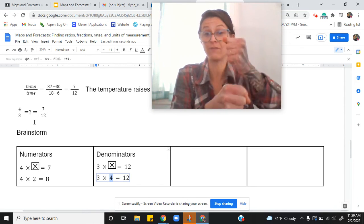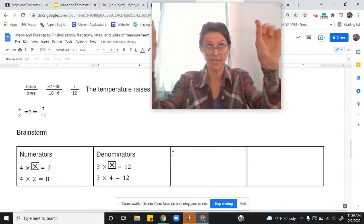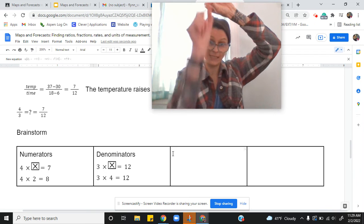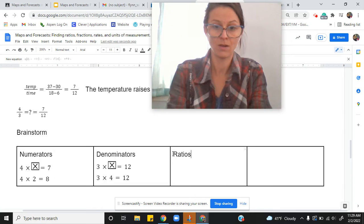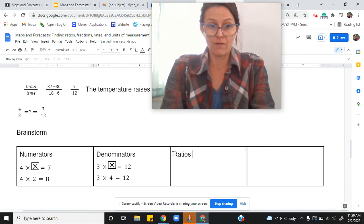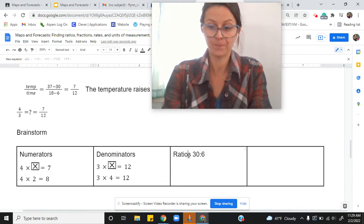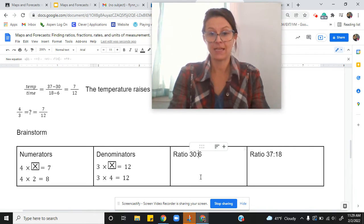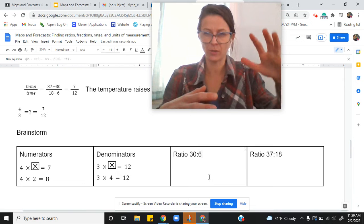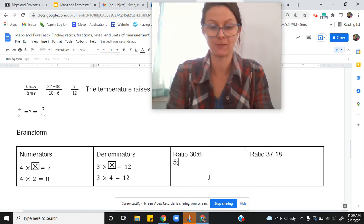We looked across denominators, now we're going to look down ratios. So ratio of 30 degrees to six hours, and we're also going to look at the ratio of 37 degrees to 18 hours and relate them. This is what we did sort of before, pulling, wrapping it all back up. 30 to 6 is the same as 5 to 1.